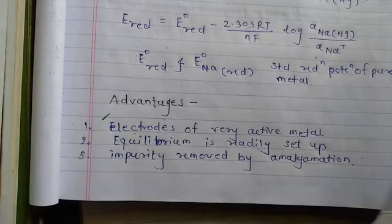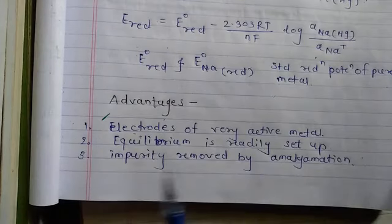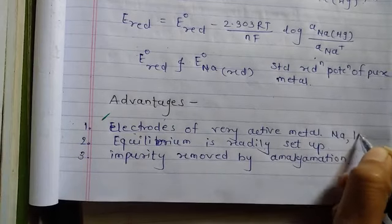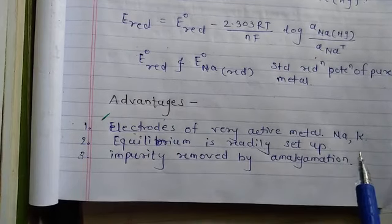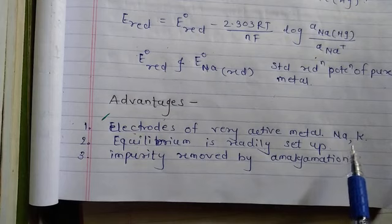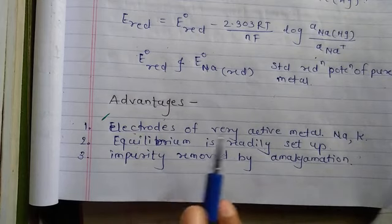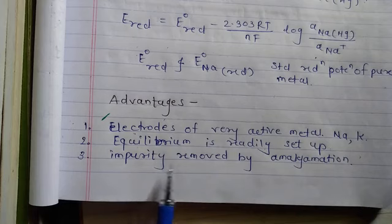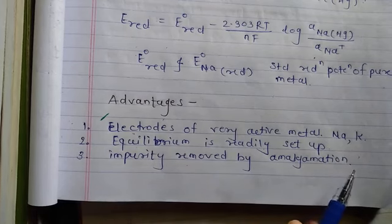The advantages of the amalgam electrode are: first, electrodes of very active metals like sodium and potassium can be set up by diluting the metal with mercury, that is, by formation of an amalgam. Second, equilibrium is readily established. Third, impurities are removed by amalgamation.